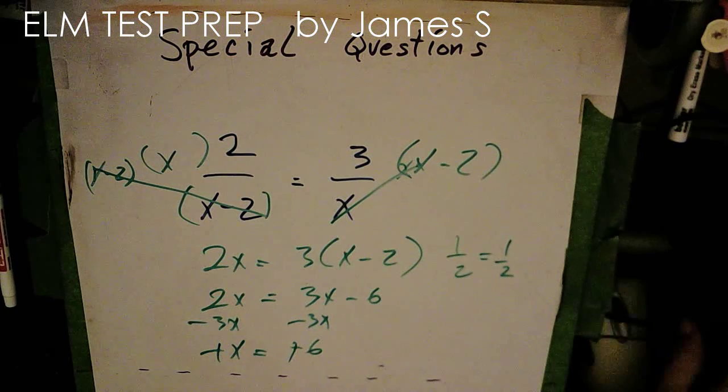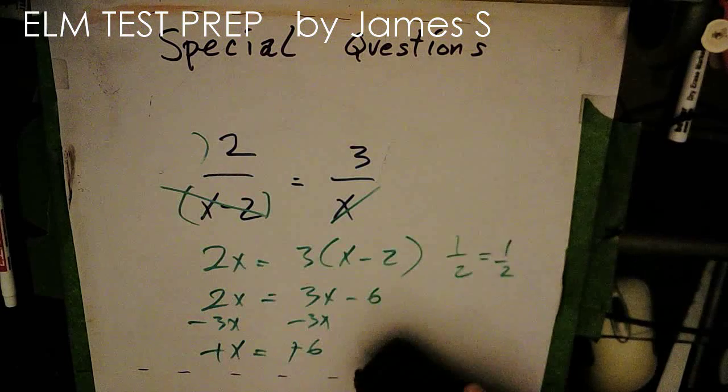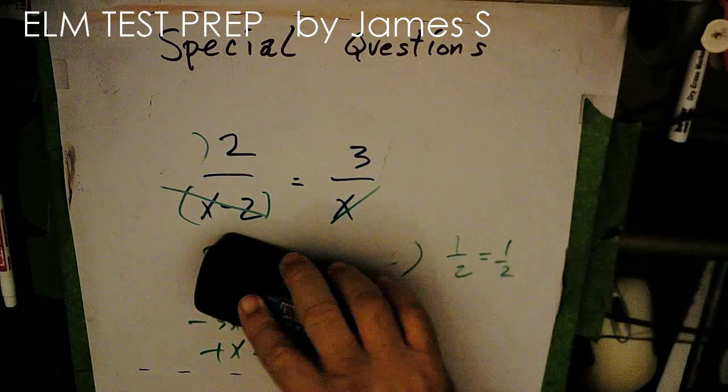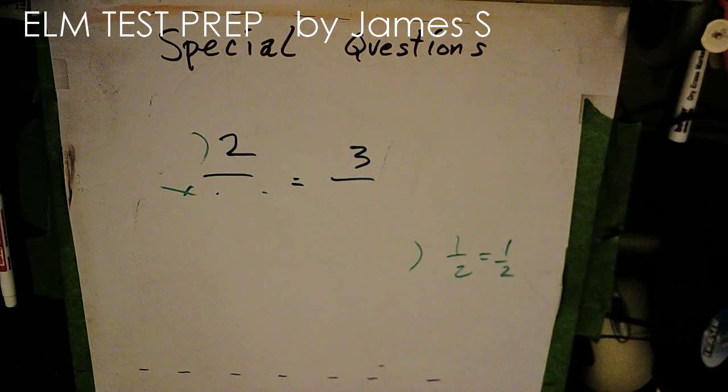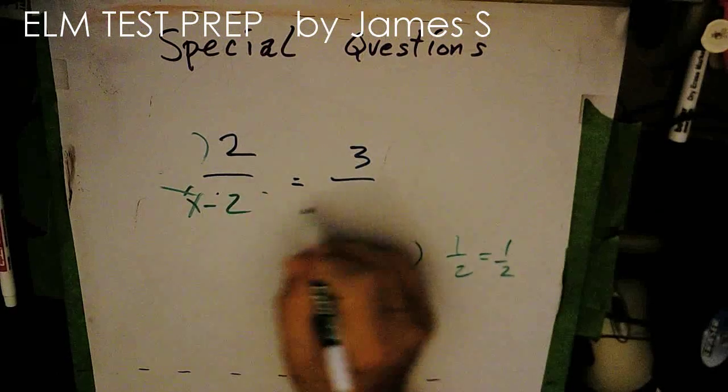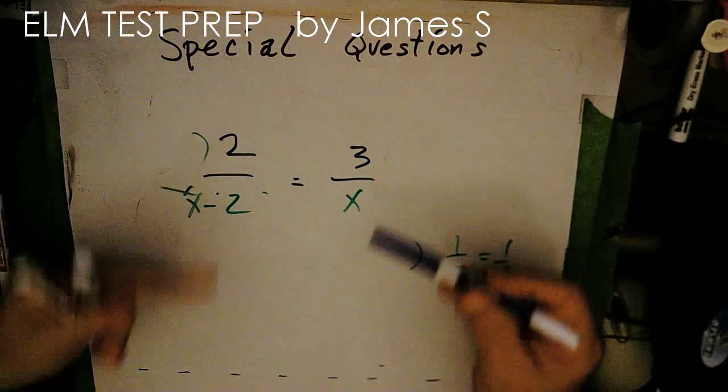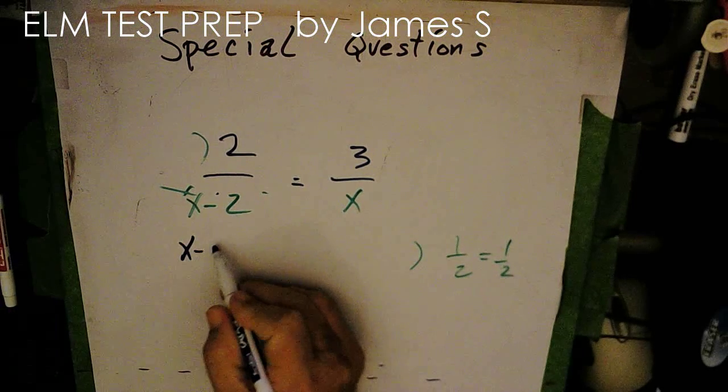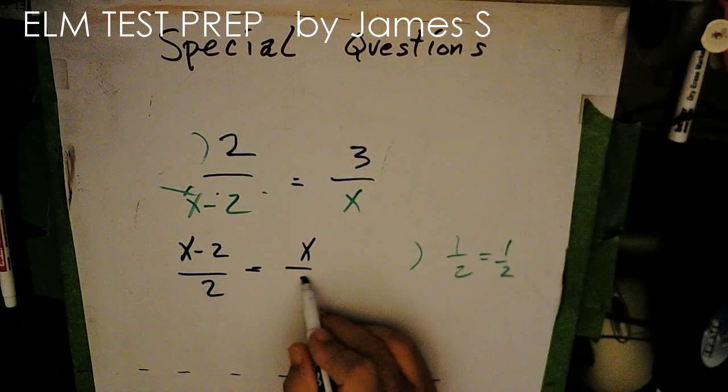Well, let's go back and do the same thing by flipping. Now we had to do a lot of multiplying and manipulating around here to get that answer. So let's try the same problem. And we're just going to flip both sides. So this becomes x minus 2 over 2. This becomes x over 3.